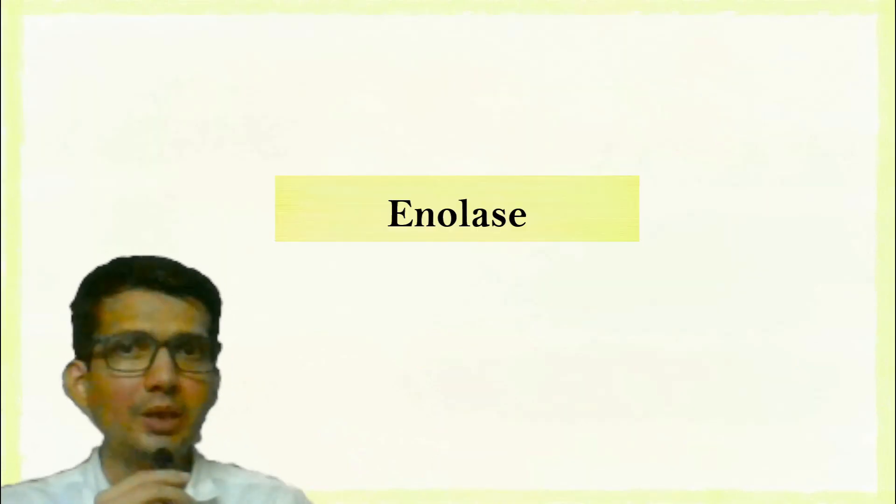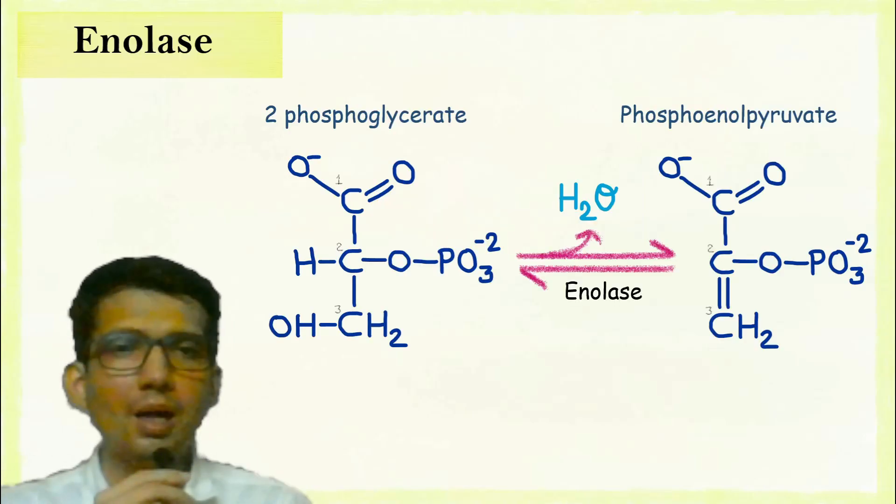Hi, let's talk about the enzyme enolase and pyruvate kinase. Enolase is the enzyme that converts 2-phosphoglycerate into phosphoenol pyruvate with the release of water.